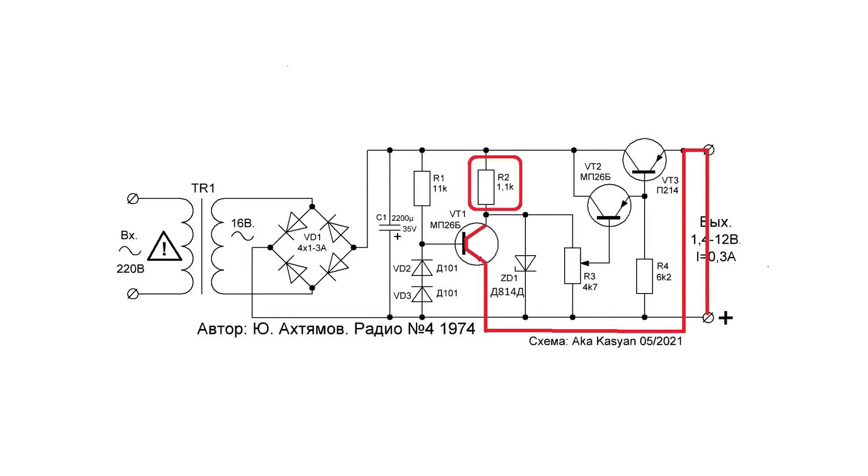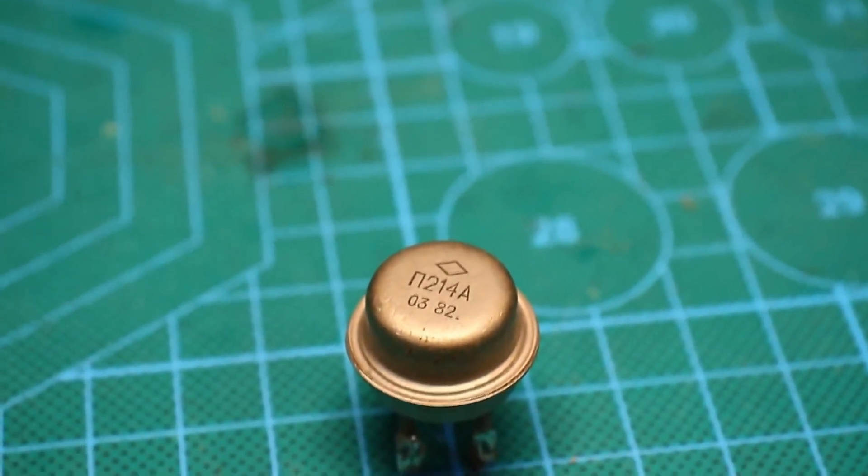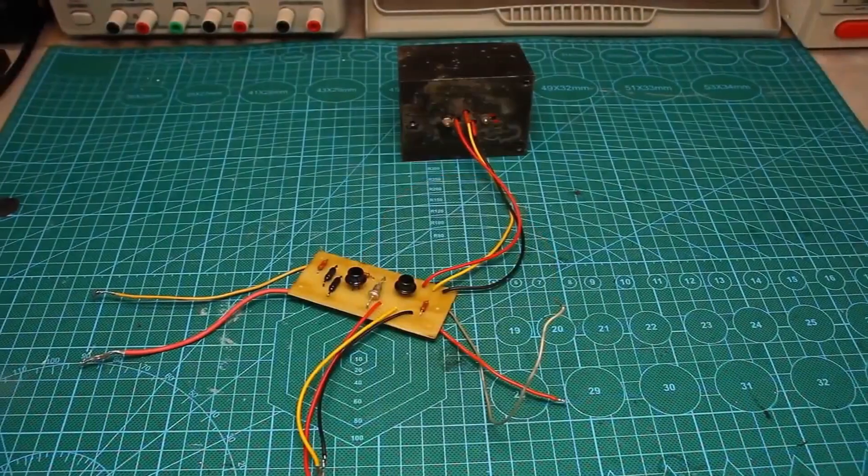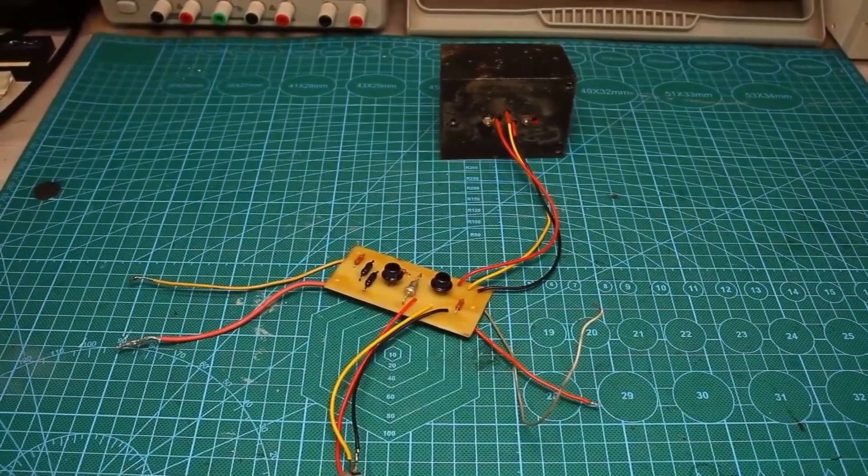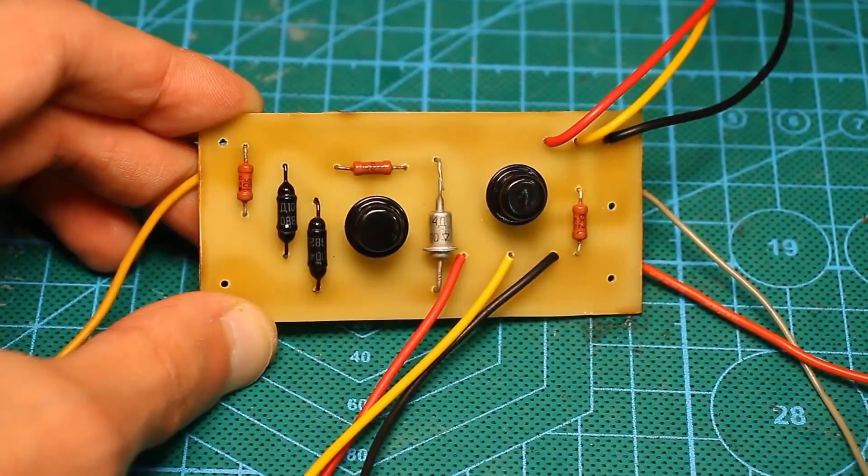The current limiting resistor for the Zener diode is connected in the collector circuit of this transistor, which results in a reduction of the negative bias on the bases of the stabilizer transistors, leading to their almost complete shutdown. As soon as the short circuit or overload is removed, the operation of the circuit resumes.